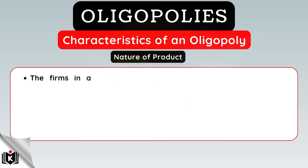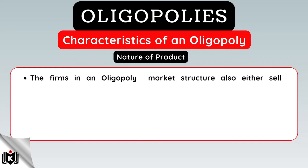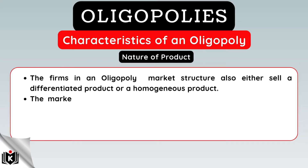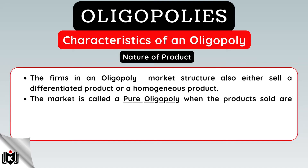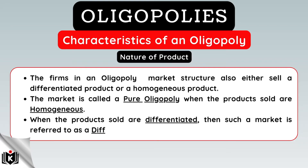The firms in an oligopoly market structure also either sell a differentiated product or a homogeneous product. The market is called a pure oligopoly when the products sold are homogeneous. When the products sold are differentiated, then such a market is referred to as a differentiated oligopoly.